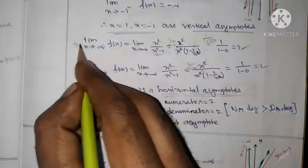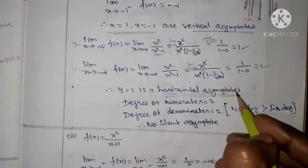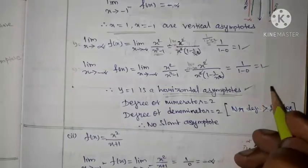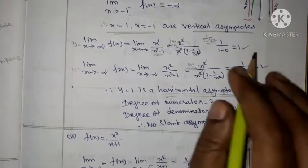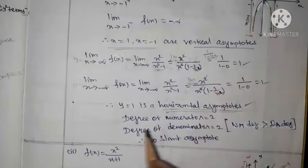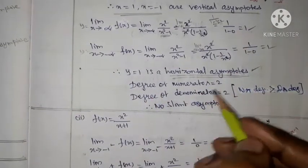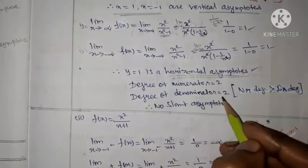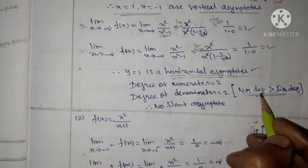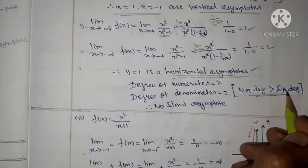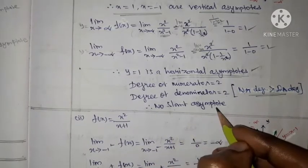Therefore, y = 1 is the horizontal asymptote. For the slant asymptote: the degree of the numerator is 2 and the degree of the denominator is also 2. Since the numerator degree is not greater than the denominator degree, the condition for a slant asymptote is not satisfied. Therefore, there are no slant asymptotes.